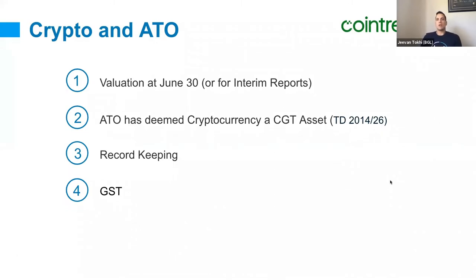Let's kick things off with crypto and the ATO. The ATO has deemed cryptocurrency a CGT asset — I've included the tax determination here. Regardless of the entity type, it's not treated as a currency, even though currency is in the name. You trade it for CGT purposes, similar to how you would treat listed shares. That means two things. First is record keeping — similar to trading in other commodities or listed securities such as shares, you need accurate record keeping: the units you hold, bought or sold, the actual valuation, and the type of broker or platform you are using.